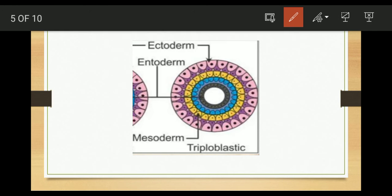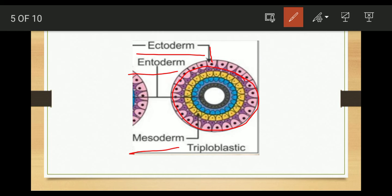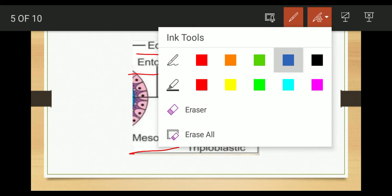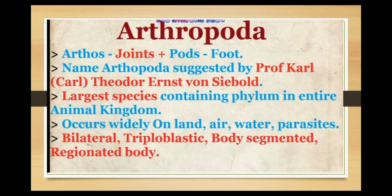The body is triploblastic. Triploblastic means the body is made up of three layers: the ectoderm, which is the outermost layer; the endoderm, which is the innermost layer; and the mesoderm, which is the middle layer. So the body is made up of three layers, and that is called a triploblastic body. The body is also segmented — divided into segments.